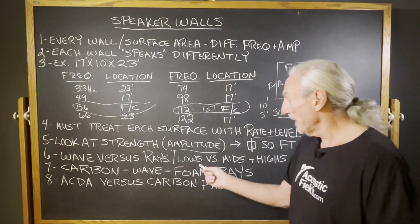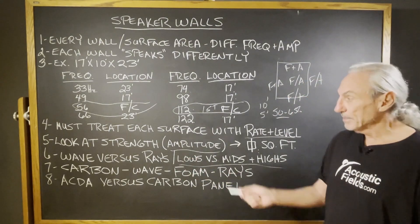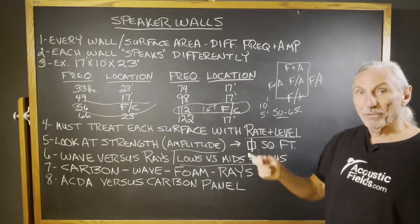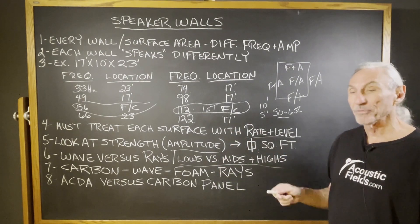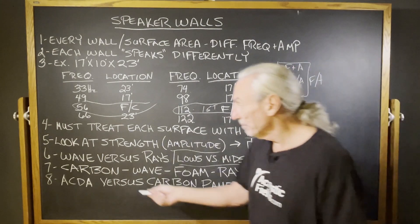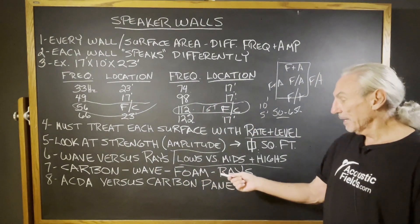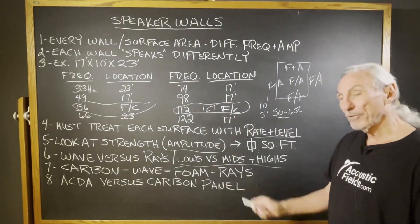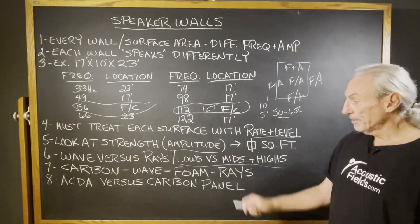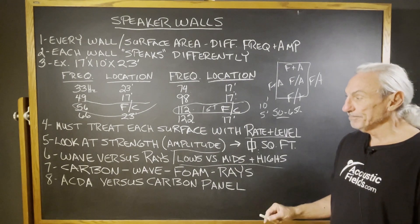Wave versus ray energy is always lows versus the mids and highs. Rays and waves take different kinds of treatment. Wave energy requires low frequency treatment, which is our carbon technology, and foam handles the rays — that's our technology for middle and high frequencies.